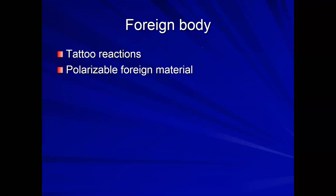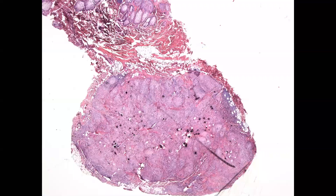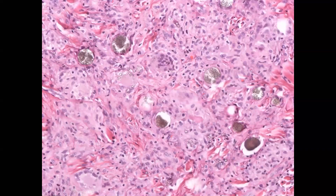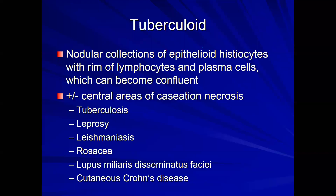Foreign body granulomas can show tattoo reactions or polarizable foreign material. In this particular case, you have nodular collections of histiocytes filled with foreign material — calcium hydroxyapatite, which is Radiesse. This is a Radiesse granuloma.